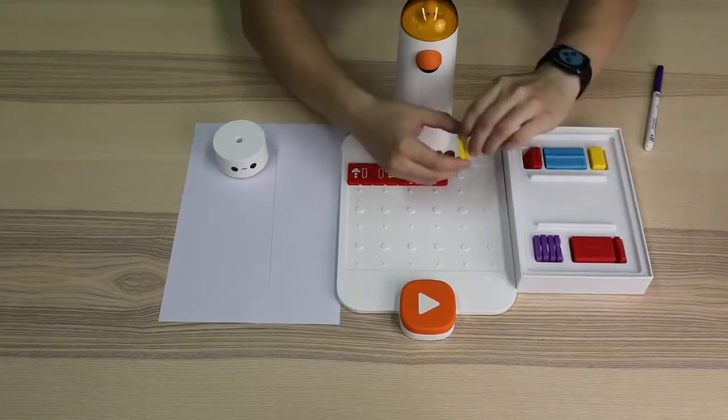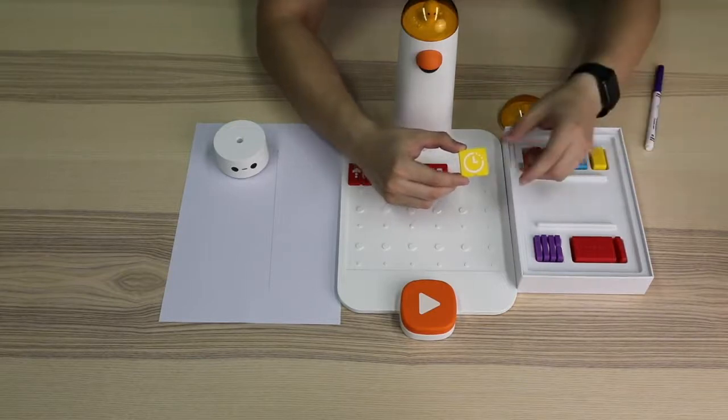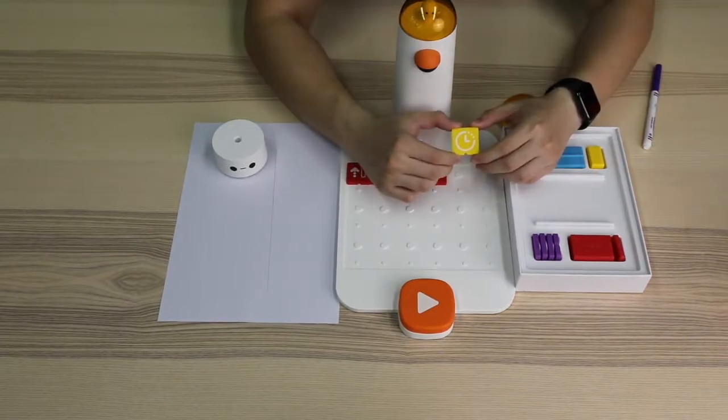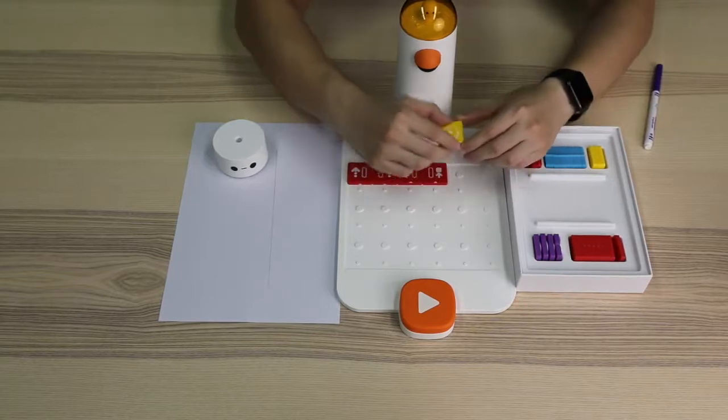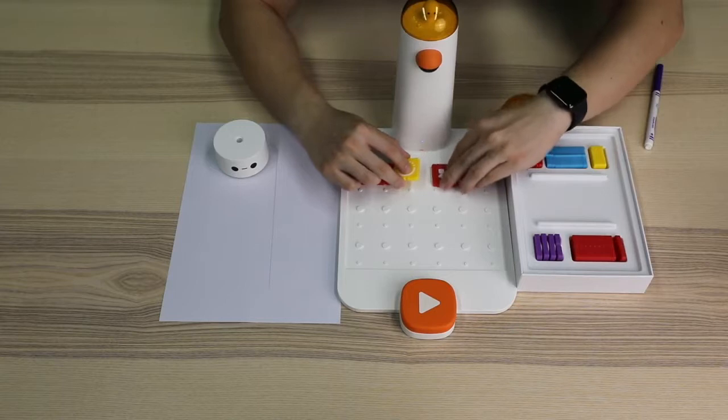Please allow me to introduce today's protagonist, waiting blocks. Let's see what will happen if we put this yellow block between the first state, which is go straight, and the second state, which is stop Matata Bolt's two wheels motion.